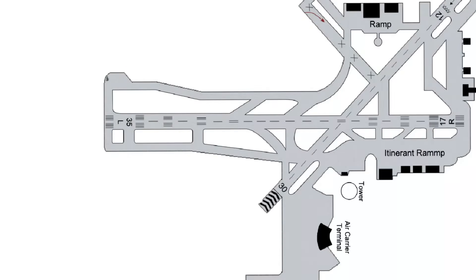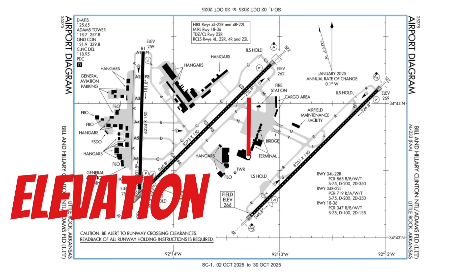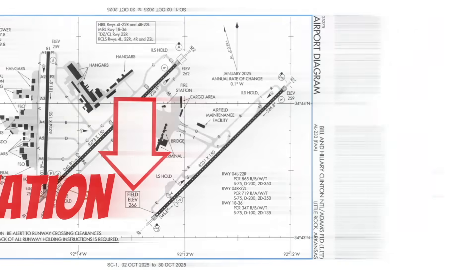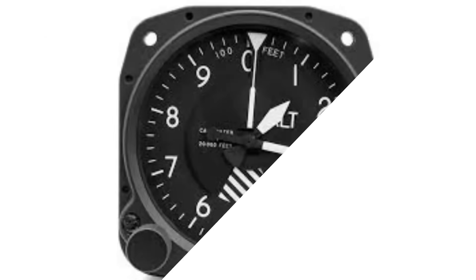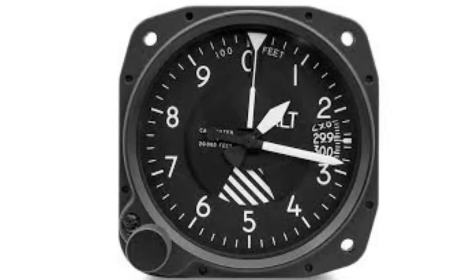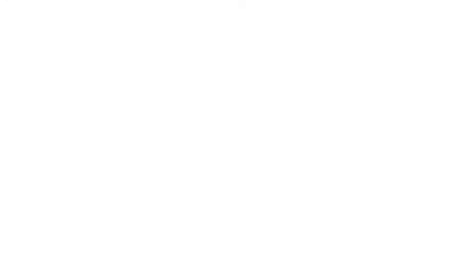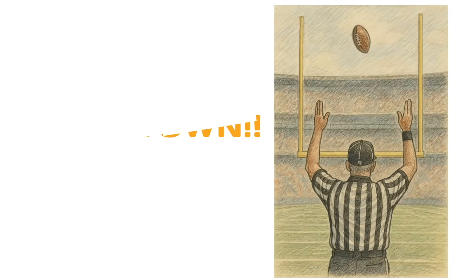Then, after you taxi up to your takeoff runway and you've completed the run-up, look down at your airport diagram to see if they have a published elevation for the runway that you're taking off from. If they do, this is what you should dial into your altimeter while you're holding short instead of the standard field elevation. This is what we call the touchdown zone elevation.